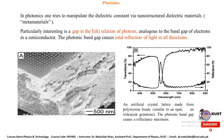In photonics, one tries to manipulate the dielectric constant using nanostructured dielectric materials called metamaterials. Particularly interesting is a gap in the ω-k relation of photons, analogous to the band gap of electrons in a semiconductor. The photonic band gap causes total reflection of light in all directions, as shown for an artificial crystal lattice made from polystyrene beads.